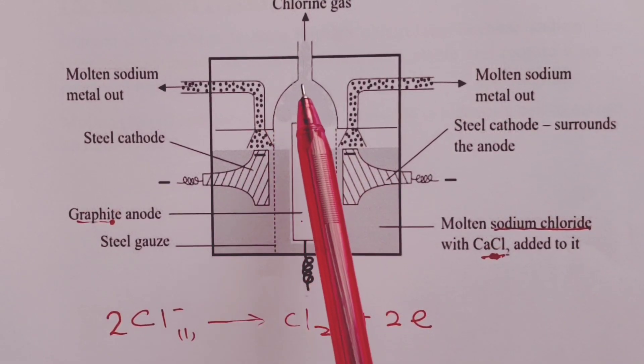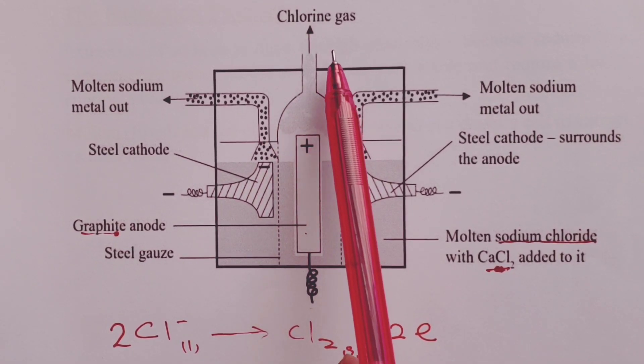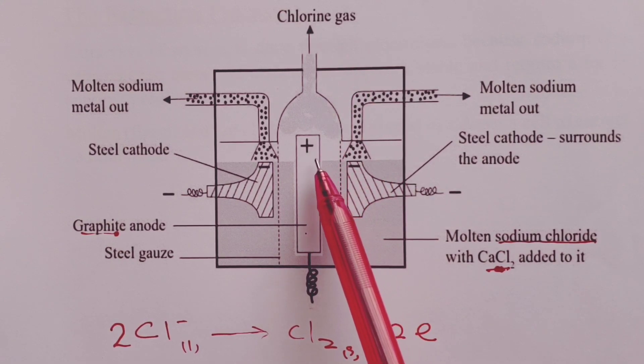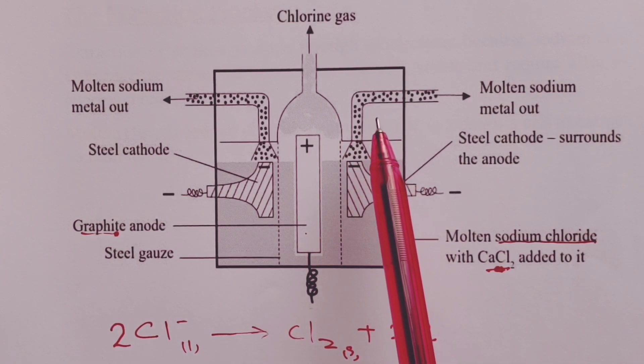Chlorine gas then escapes through a hood above the anode where it is collected, purified, and stored in pressurized tanks.